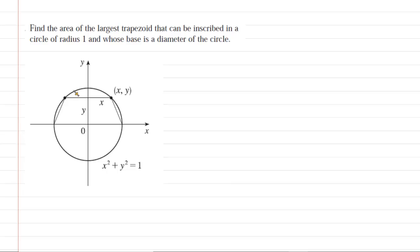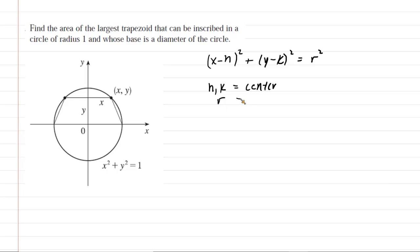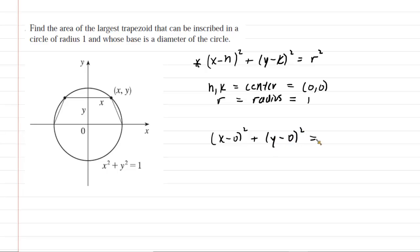We have a circle of radius 1, centered at the origin for simplicity. The equation of a circle has the form where h and k represent the x and y coordinates of the center, and r represents the radius. Since h and k are both 0 and the radius is 1, we get x minus 0 squared plus y minus 0 squared equals 1 squared, which simplifies to x squared plus y squared equals 1.